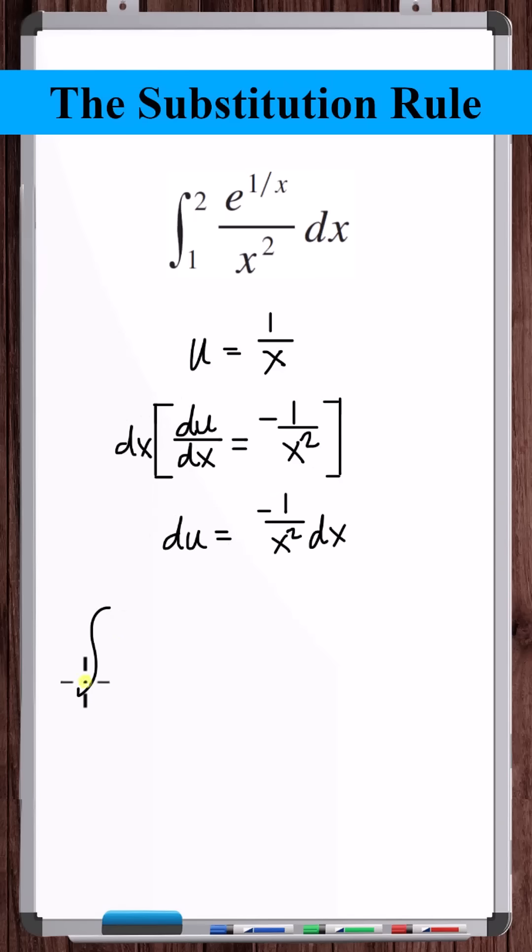So now let's make the substitution. We have e to the u, and then we can see minus du equals 1 over x squared dx. So let's put a minus sign up front and du.